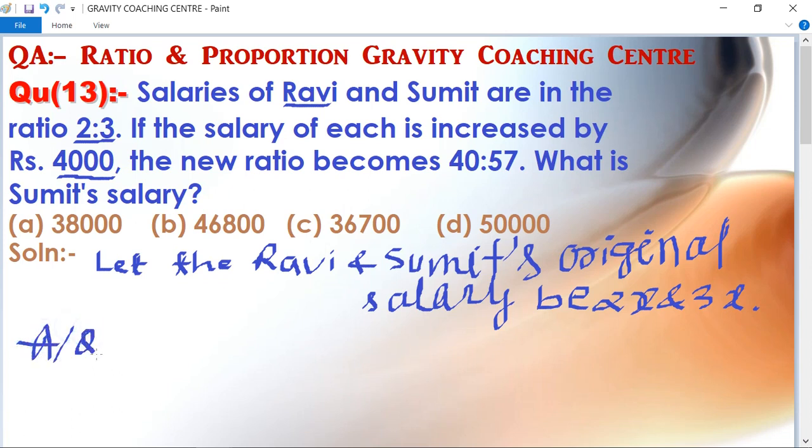So 2x plus 4000 upon 3x plus 4000 equal to the new ratio, 40 upon 57.